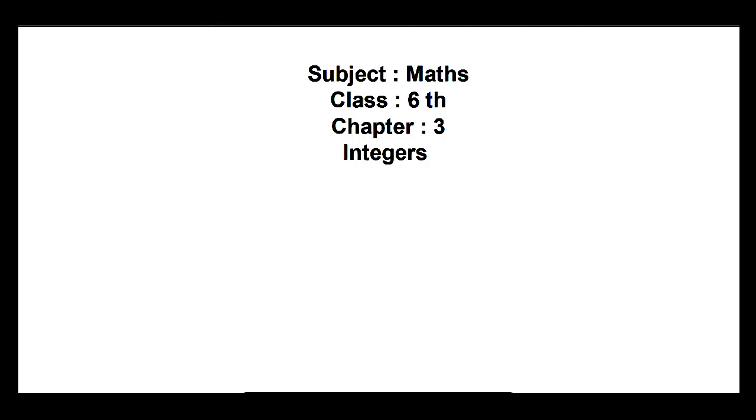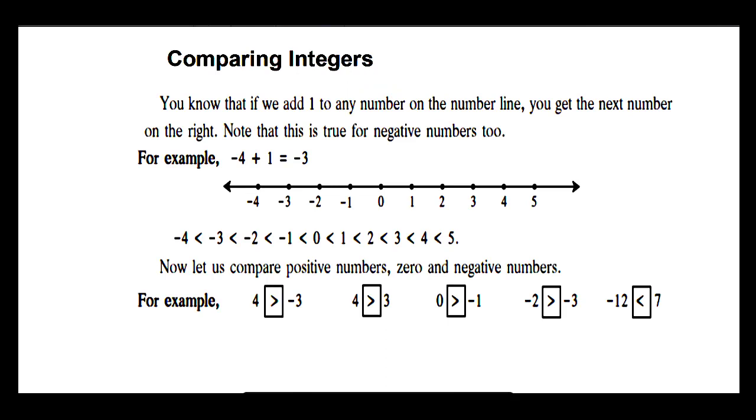Chapter 3: Integers. Comparing Integers. You know that if you add 1 to any number on the number line, you get the next number on the right. Note that this is true for negative numbers too.